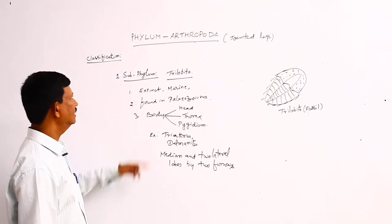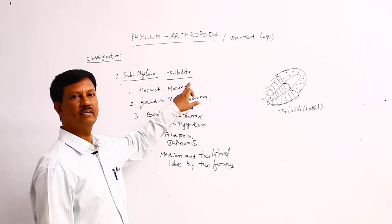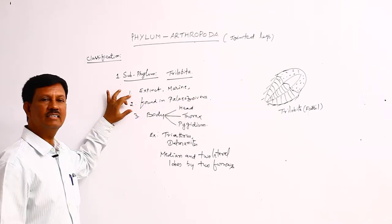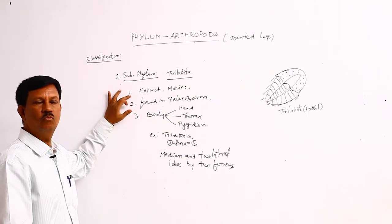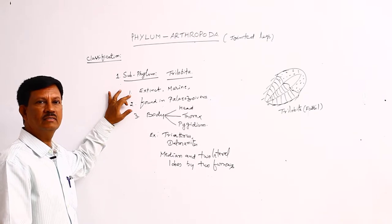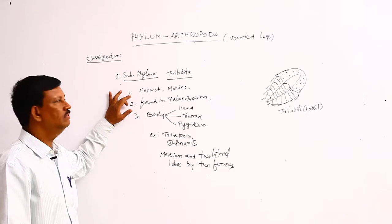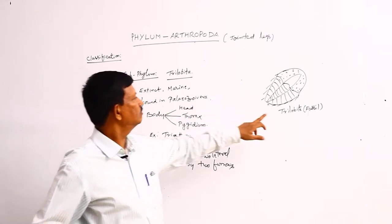I'll discuss the main characteristics of the subphylum Trilobita. Trilobites are extinct animals. Once upon a time these animals were found, and after that they became extinct. At present, there are no living forms. An example is trilobite.